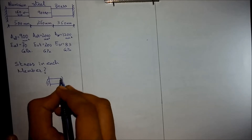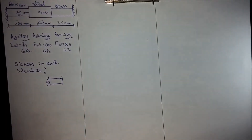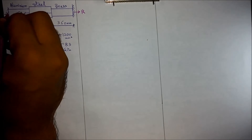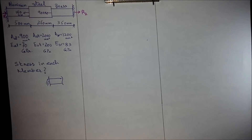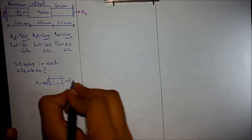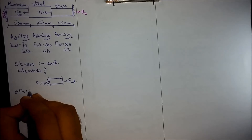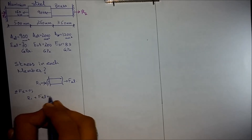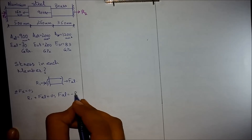For the first member of aluminium, we always assume the reaction direction. Let's call this R1 and this R2. For the aluminium member, upon summation of forces in the x-direction, the force in aluminium equals minus R1.